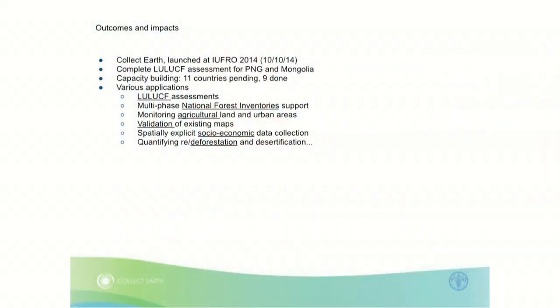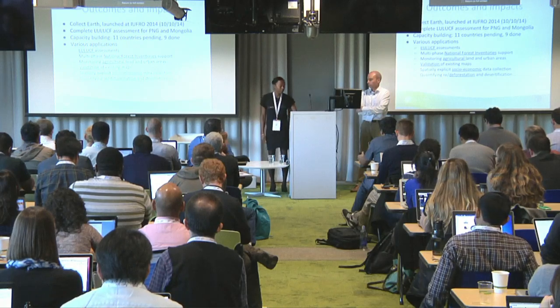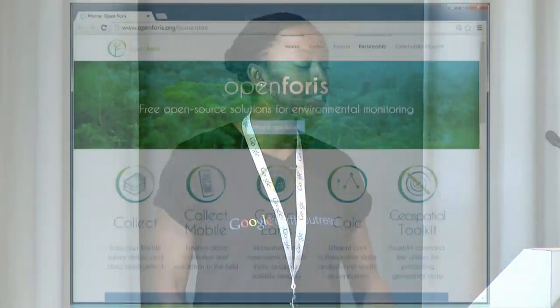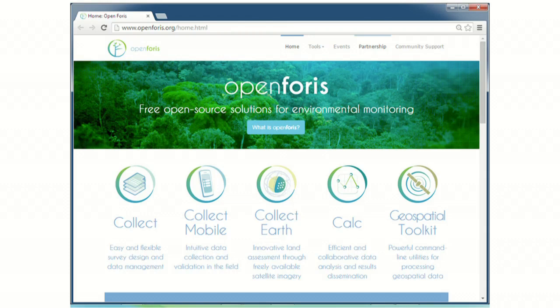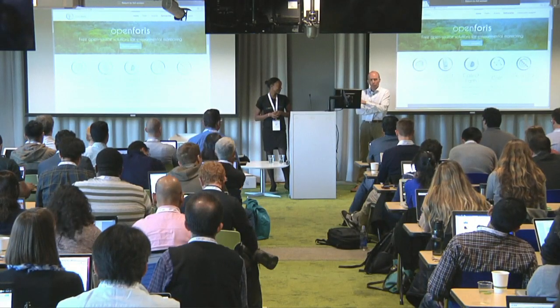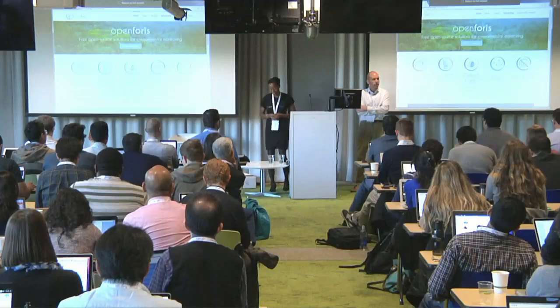We recently launched CollectEarth publicly at the World Forestry Congress and it's now available online — you can all download it and begin working with it. Thus far, we've been working with national governments to do their land use change assessments and we've completed capacity-building sessions in nine countries, with eleven more to go. Two countries have completed their national assessments: Papua New Guinea and Mongolia. We're now at a point where we'd like to begin working with other organizations, NGOs, and academic groups interested in using this software for sub-national or national scale assessments. You can visit the Open Forest website at www.openforest.org. We've also gone social — we're on Twitter and Facebook.